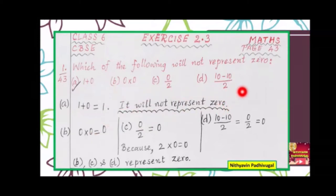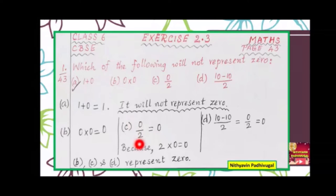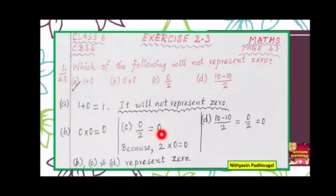Let us consider the remaining options for verification. 0 multiplied by 0: zero multiplied by any number is 0, so 0 into 0 is equal to 0. Then, 0 divided by 2 is equal to 0 only, because 2 into 0 only can give you 0 as the result. In the second multiplication table, 2 times 0 only will give you 0 as the product.